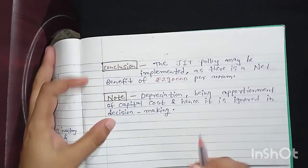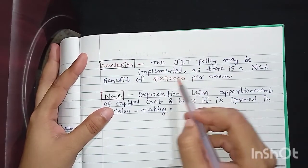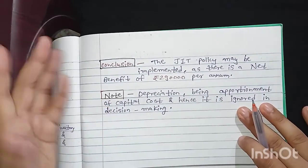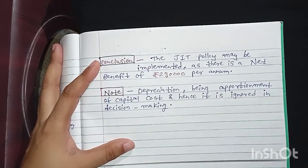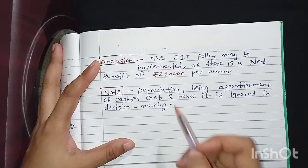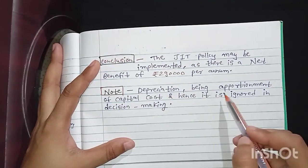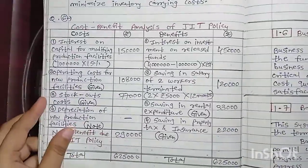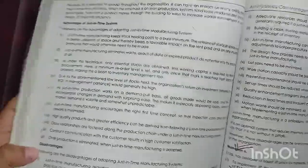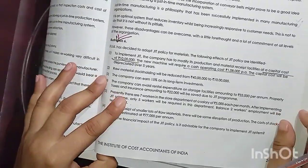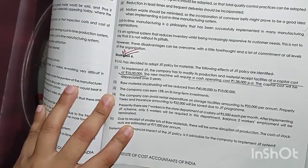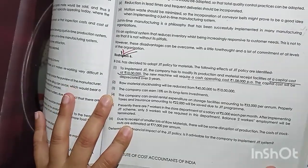The JIT policy may be implemented as there is a net benefit of 2,90,000 per annum. If there is a benefit due to JIT policy, we should adopt it. Depreciation being an apportionment of capital cost is ignored in decision making. That completes Illustration Number 6. If you found this video helpful, please like the video, share with your friends, subscribe to the channel, and press the bell icon to get more updates.